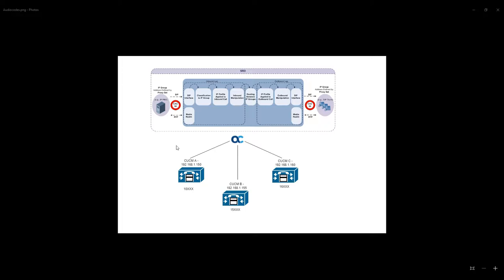In a normal scenario, assuming you have an SBC or SME in place, for any calls destined to call manager B and C you send them to the SME, and the SME takes care of call routing. Likewise, you point the same route patterns for destination A and C towards the SME. We are going to leverage AudioCodes as an SBC to handle all this call routing.